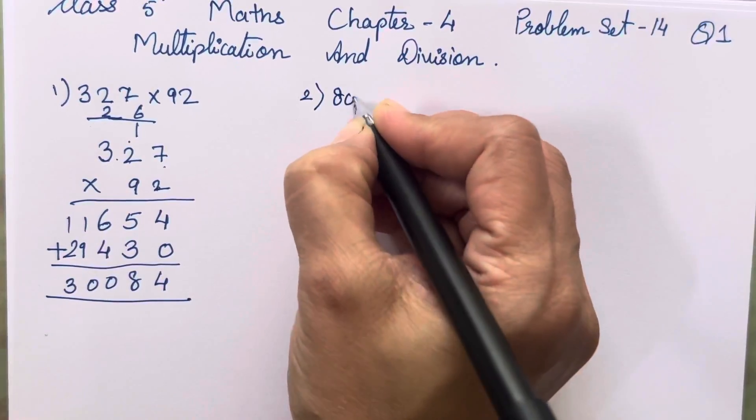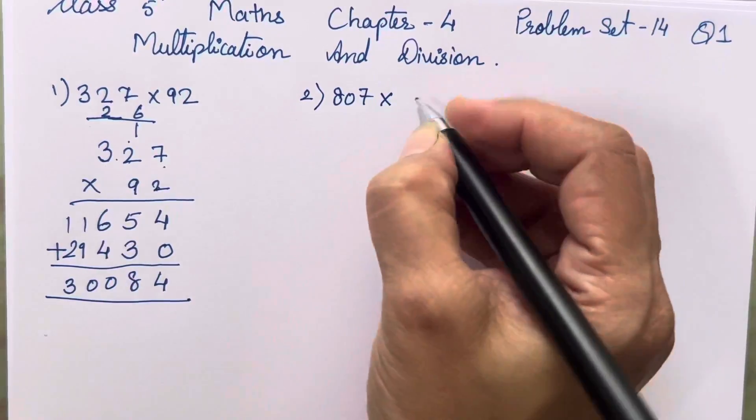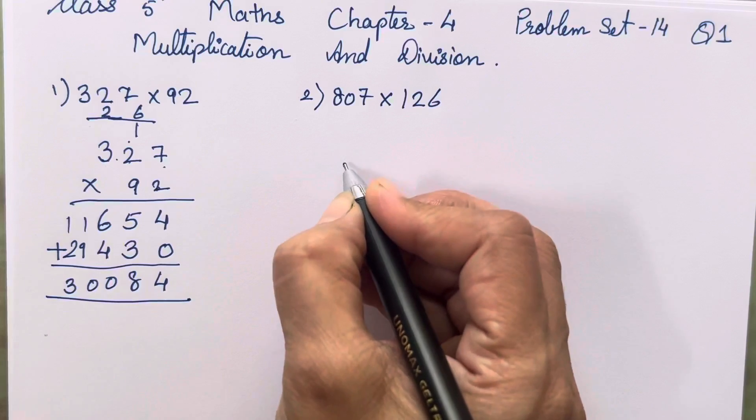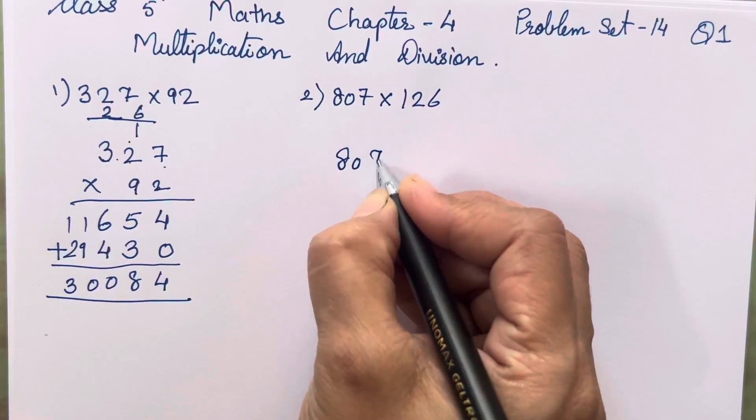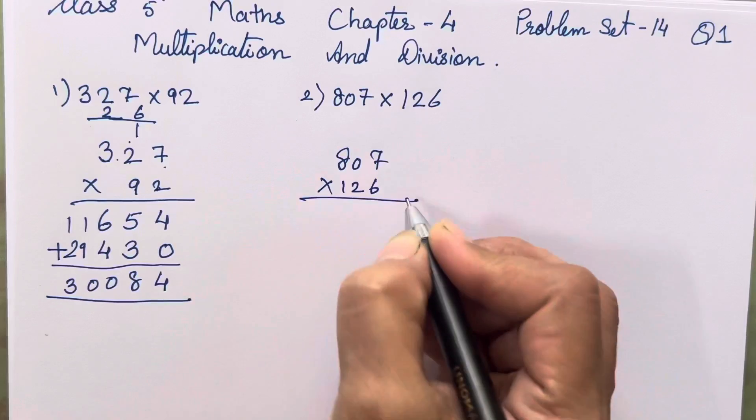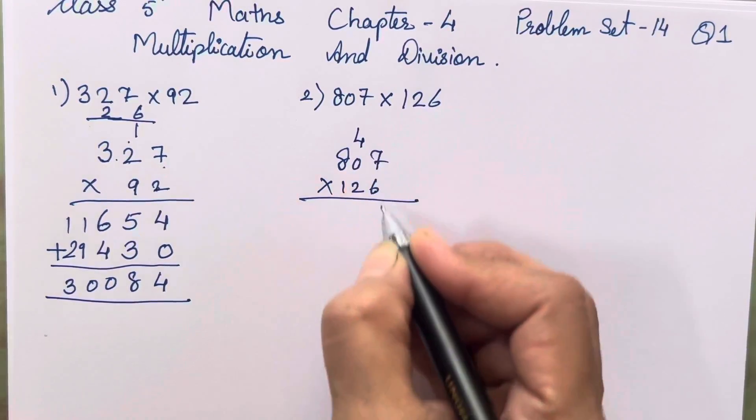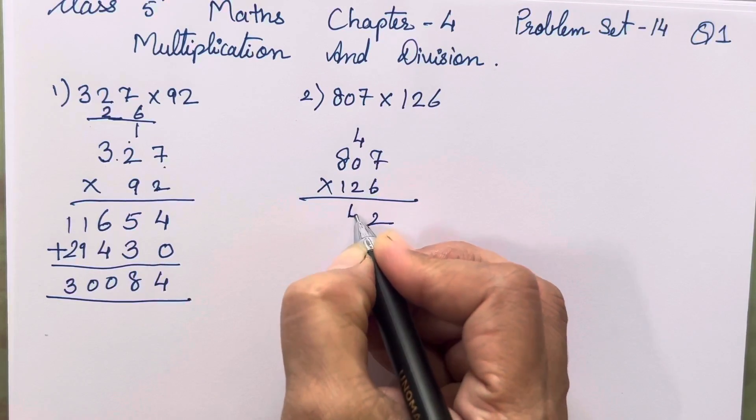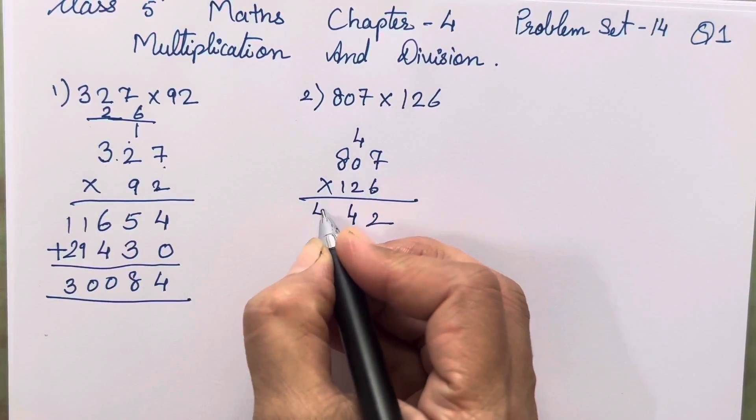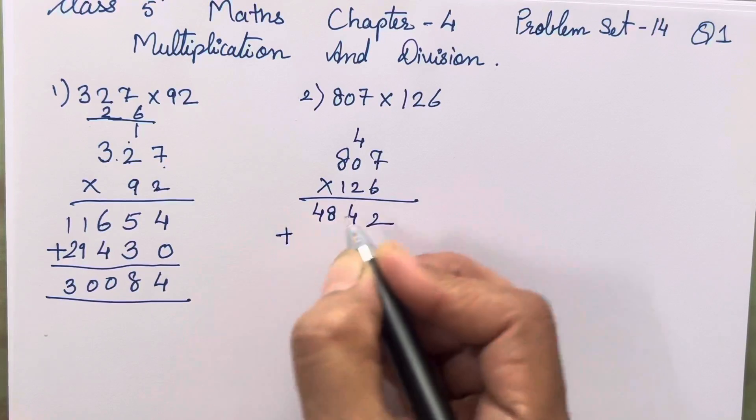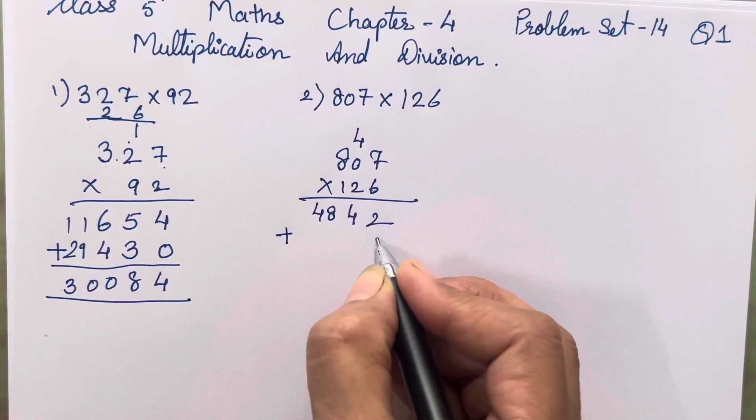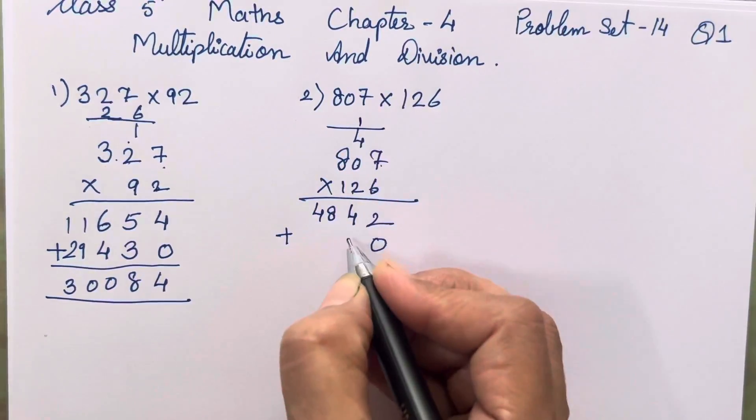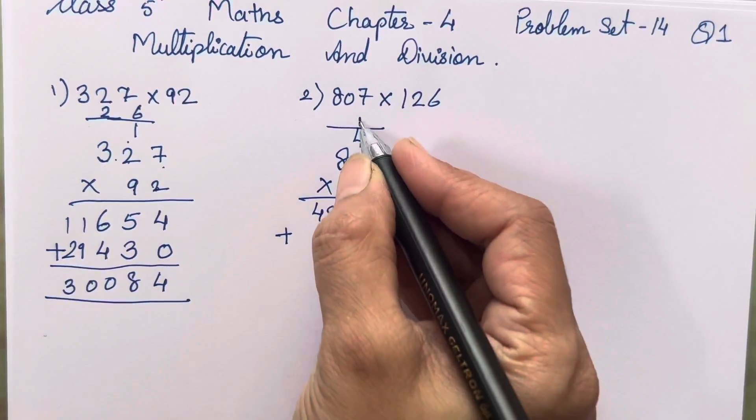So in this way, you all have to multiply children. Let's move on to the next sum, which is 807 and 126. 6 sevens are 42, 6 zeros are 0, 4 will be carried forward. 6 eights are 48.